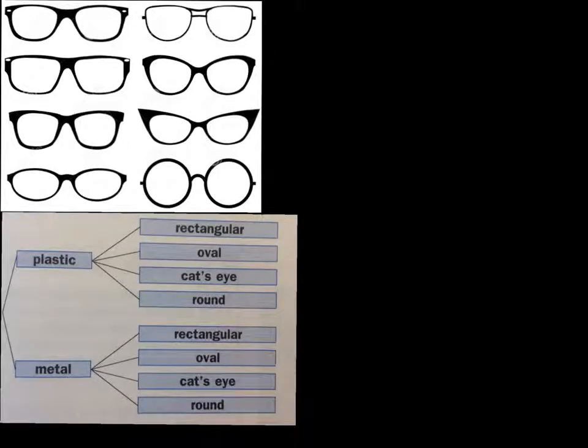One way to count the number of possibilities in a problem such as this is to use a tree diagram. A tree diagram uses branching to list choices. Here is a tree diagram representing your glasses choices.